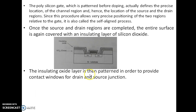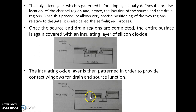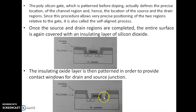The insulating oxide layer is then patterned in order to provide the contact windows for the drain and source junctions. Again the oxide layer is patterned to form the connection between the drain and source, creating contact windows for the drain and for the source.